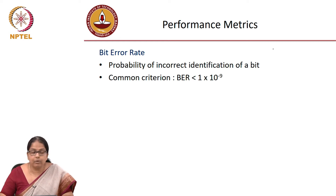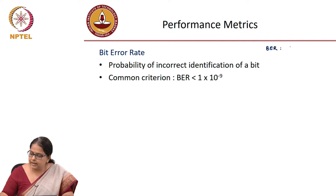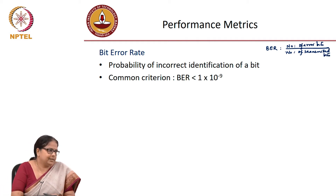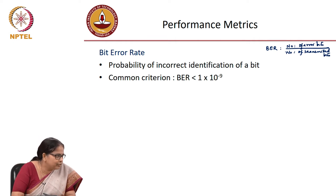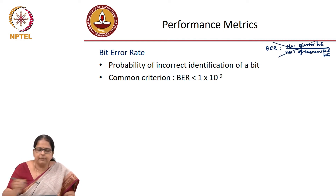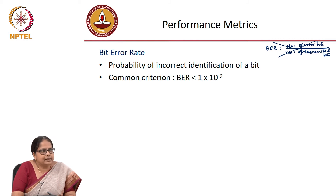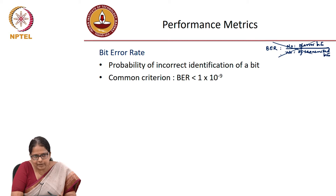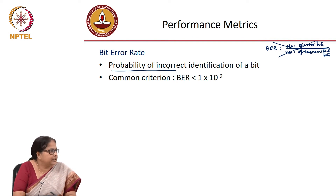It is also defined as — if I want to write it as a formula — bit error rate is the number of error bits divided by number of transmitted or received bits. But this is actually incorrect. For understanding it is okay, but you should never quote this as a formula. Simply because transmission is a continuous phenomenon; error is something statistical because error comes from noise. So it is a statistical phenomenon. If you were to formally define bit error rate, it is the probability of incorrect identification, or probability of receiving incorrect bits, or probability of incorrect demodulation of bits.